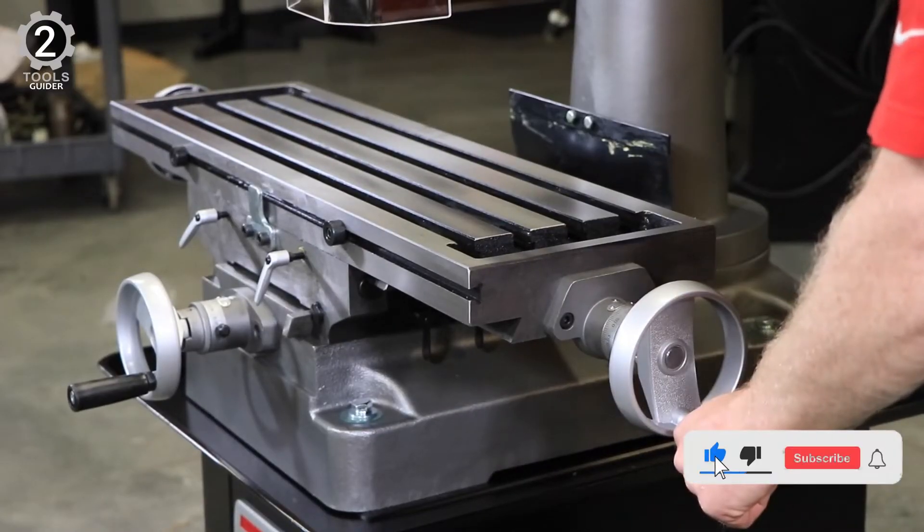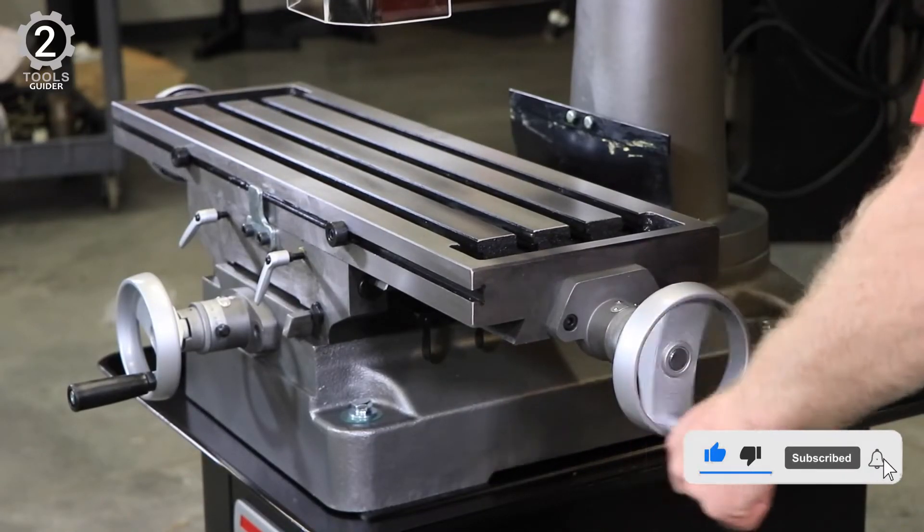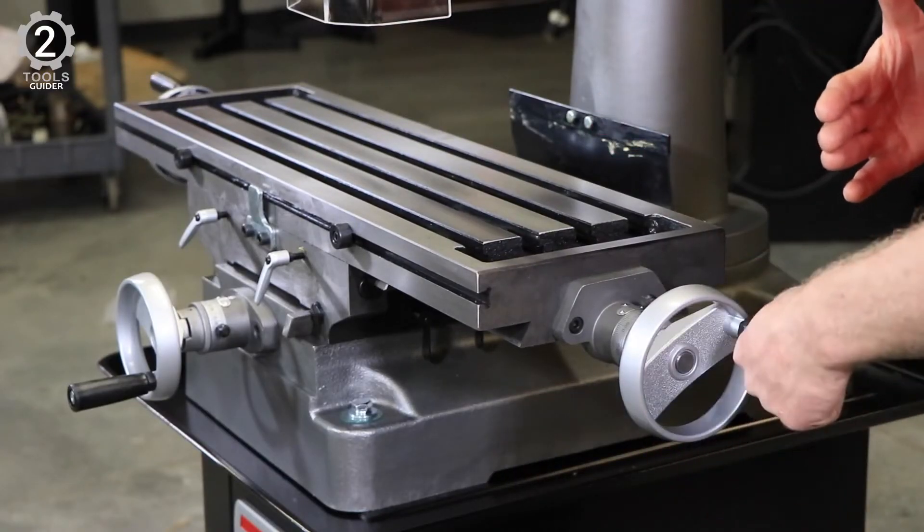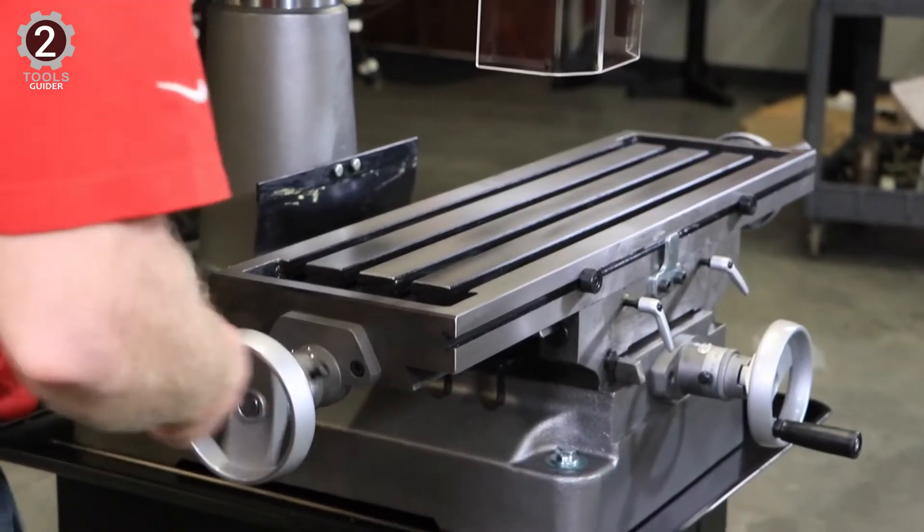The JMD 18 also has user-friendly features such as a positive quick-stop knob, an easy-to-read internal depth gauge, and satin-finished easy-read dials.